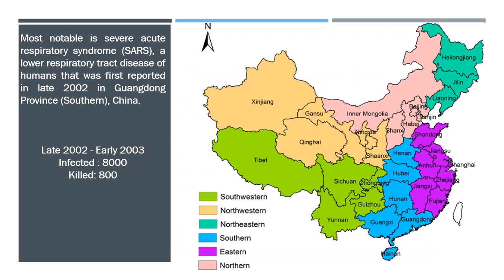A coronavirus, SARS-CoV, was identified as the etiological agent of SARS, and assessments determined that the virus crossed to human hosts, most likely in southern China in Guangdong province, from zoonotic reservoirs, including bats, Himalayan palm civets (Paguma larvata), and raccoon dogs (Nyctereutes procyonoides), the latter two of which are sold in exotic animal markets.